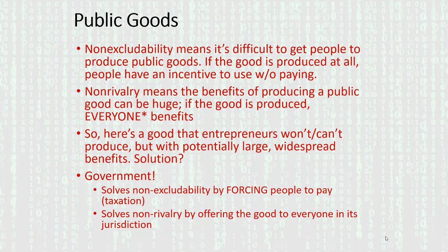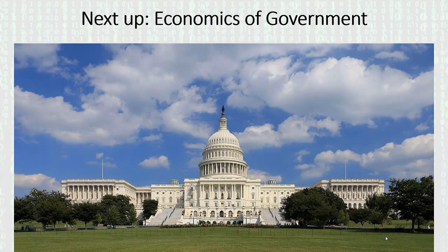Government will also overcome the non-rivalry issue by basically saying: once it produces a good, it offers it to everybody in its jurisdiction pretty much for free, with no additional charges. Think about highways, police protection, the court system, national defense — produced for everybody altogether and you don't pay separately. Public goods thus leads us into the economics of government. We'll pick up this thread in the next lecture, covering the rationale for government to produce public goods, examples of what those public goods are, and the special incentive problems that arise when transitioning from private markets into the often murky world of politics and government.